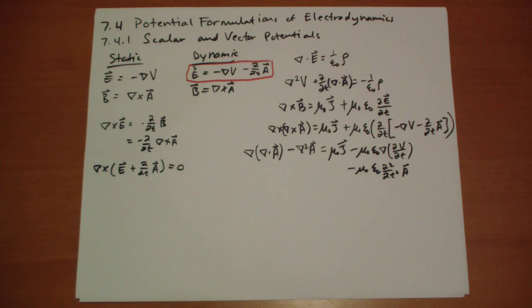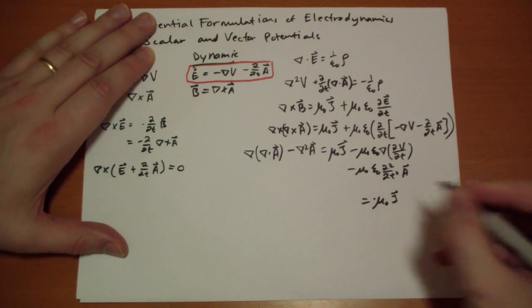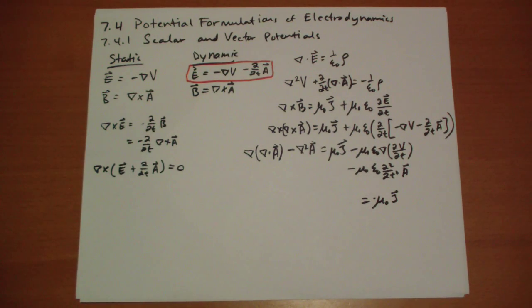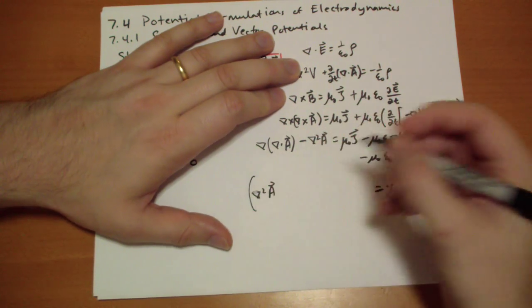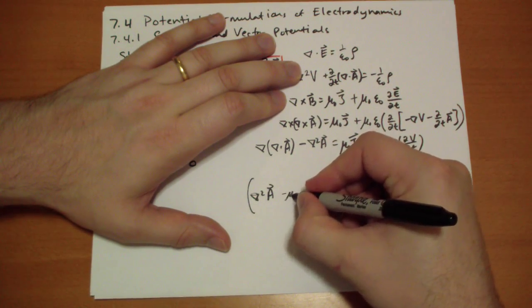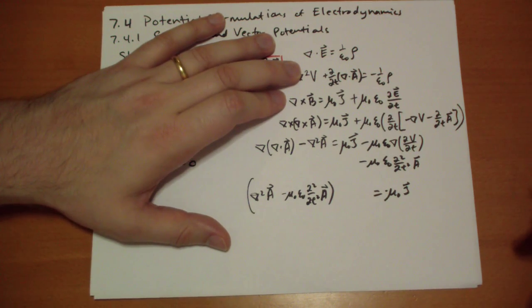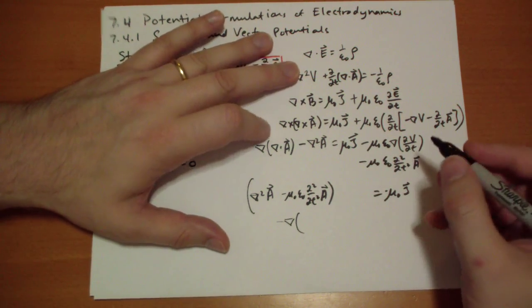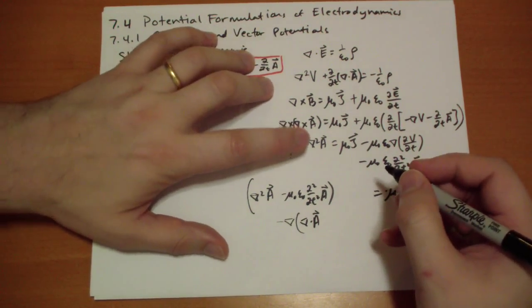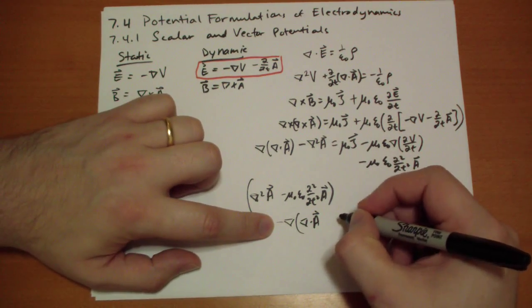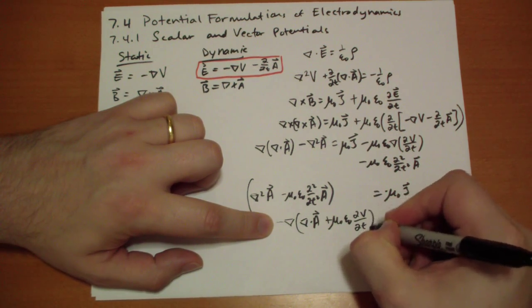And we're going to collect all the terms onto one side, flip signs, so we're going to get equal to minus mu-naught j vector. And we're going to start with the Laplacian term. We're going to group it with the second time derivative. And then we're going to subtract out the gradient of a scalar quantity, which would be the divergence of A. And we're going to add in the time derivative of V.